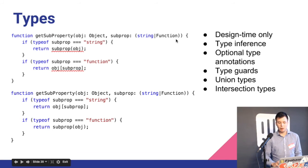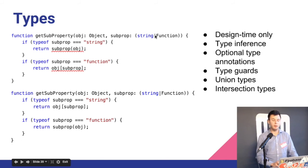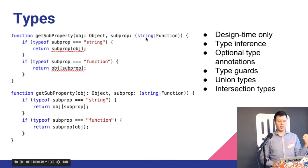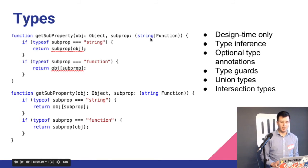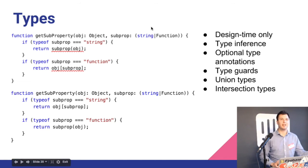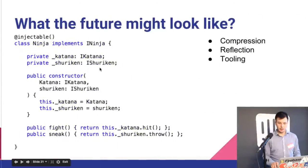The opposite of union types is intersection types. With a union type something can be a string OR a function, but with an intersection type you use AND — for example, something must be a Vehicle AND must be Electric. Both classes at the same time.